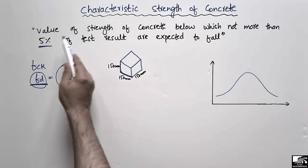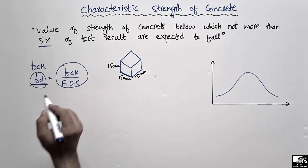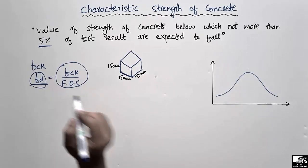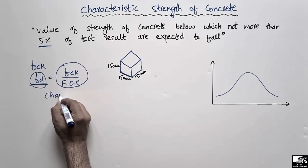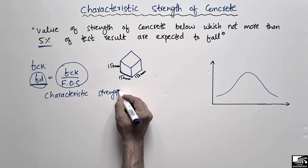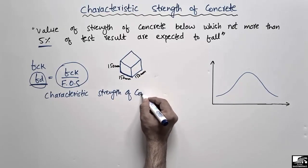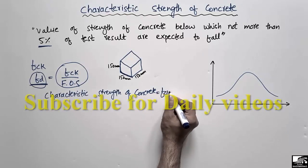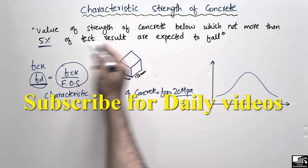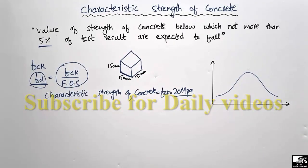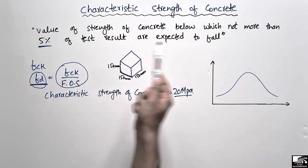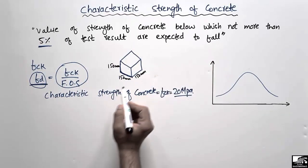Now, what does this definition mean? Let's consider that the characteristic strength of the concrete, FCK, is equal to 20 megapascal. According to the definition, it is the value of the strength of concrete below which not more than five percent of results are expected to fall.